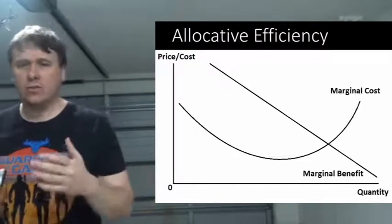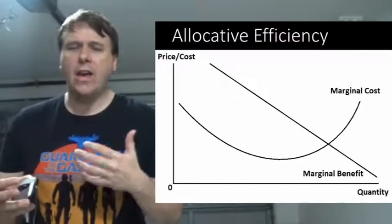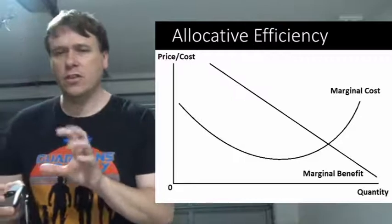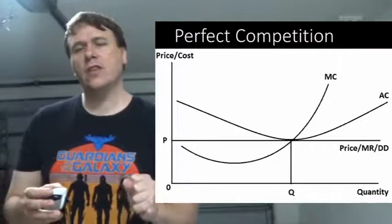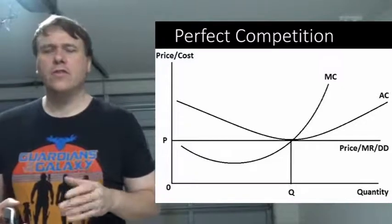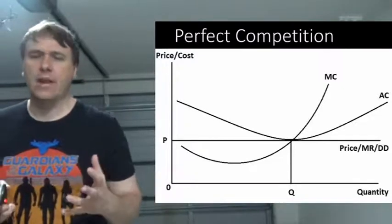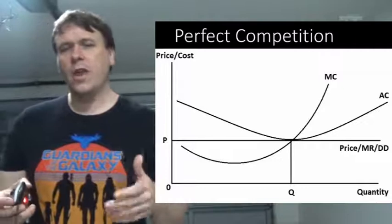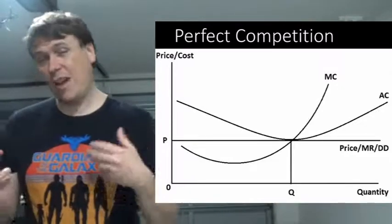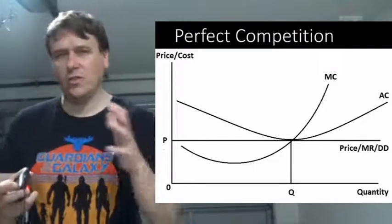And also marginal cost or marginal benefit will be where, ideally, where your price would be. So your price would actually equal to marginal cost. And in terms of market structures, I mentioned this I think in another video, you're basically looking at a perfectly competitive market structure. So that is where your price equals to your marginal revenue, equals to your demand, equals to your average cost, equals to your marginal cost.